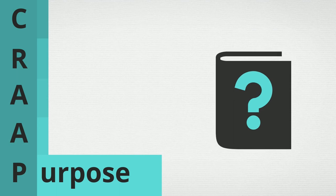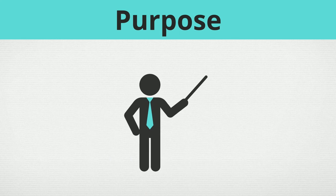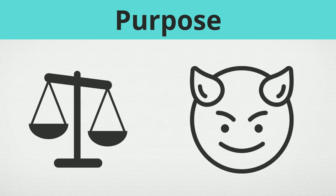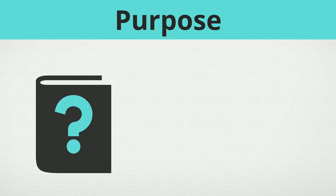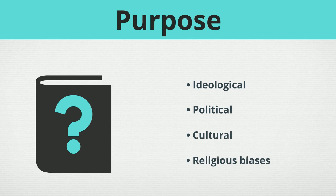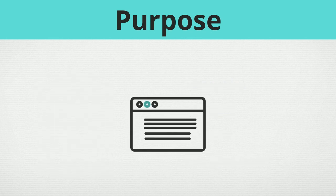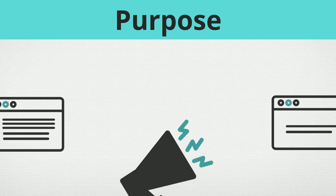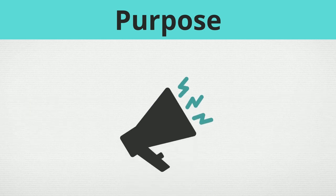Purpose. Why does this information exist? When evaluating a source, it's always important to think about the reason why it was created in the first place. Is the purpose instructional? Or is it someone trying to sell you something? Does the point of view appear objective and impartial? Or is the author trying to persuade the audience somehow? Remember to look closely — sometimes the real purpose of a work isn't immediately obvious. Check for ideological, political, cultural, or religious biases before deciding on a source. Even if the source is entirely accurate, comparing it to other sources can provide you with information that was left out for any reason. Be thorough. Sometimes what looks like a fact may simply be an opinion or propaganda. Don't be afraid to compare sources.